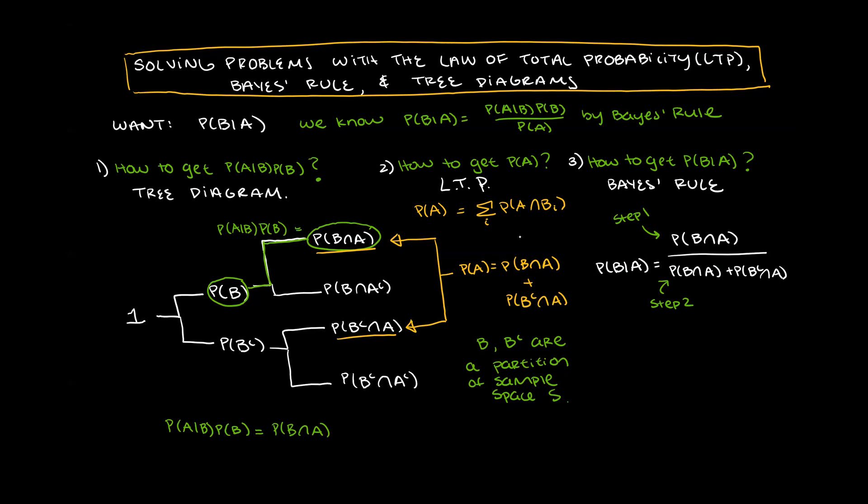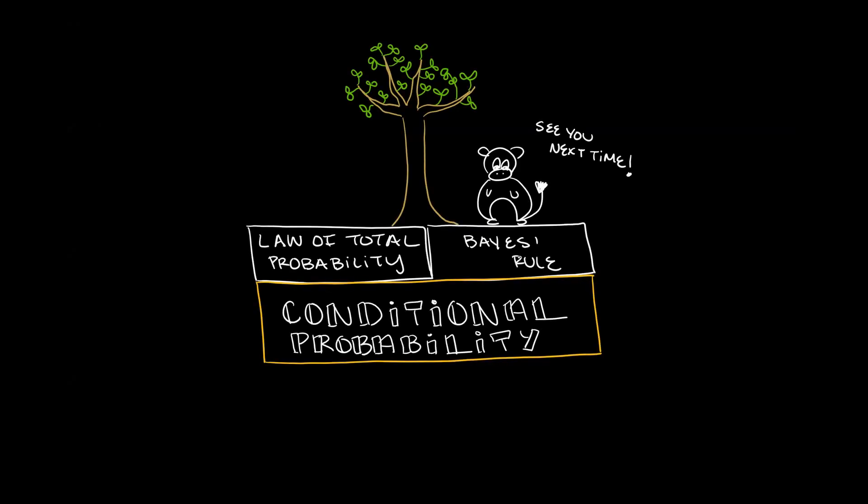So in summary, chapter 1.4 in the textbook is very important. Refer to it often. When we are given certain information, but not necessarily about the event A which is of interest, we are most likely dealing with conditional probability. So draw a tree diagram. See if you can use the law of total probability and or Bayes' rule. Good luck and have fun.